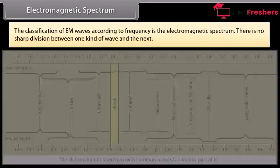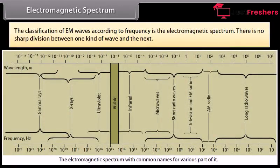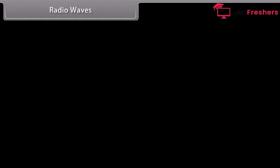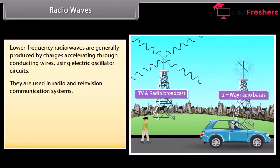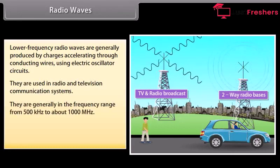Electromagnetic spectrum: The classification of EM waves according to frequency is the electromagnetic spectrum. There is no sharp division between one kind of wave and the next; the classification is based on how the waves are produced or detected. Radio waves are generally produced by charges accelerating through conducting wires using electric oscillator circuits. They are used in radio and television communication systems, generally in the frequency range from 500 kHz to about 1000 MHz.